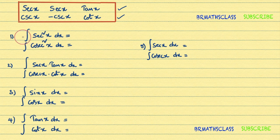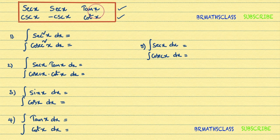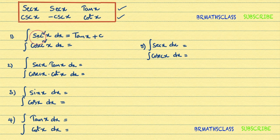The first formula: integral of secant squared x dx. We know that secant squared x is secant x times secant x. Observing the table, secant x times secant x — what is remaining in the first row? Remaining is tan x. So integral of secant squared x dx is tan x plus C.